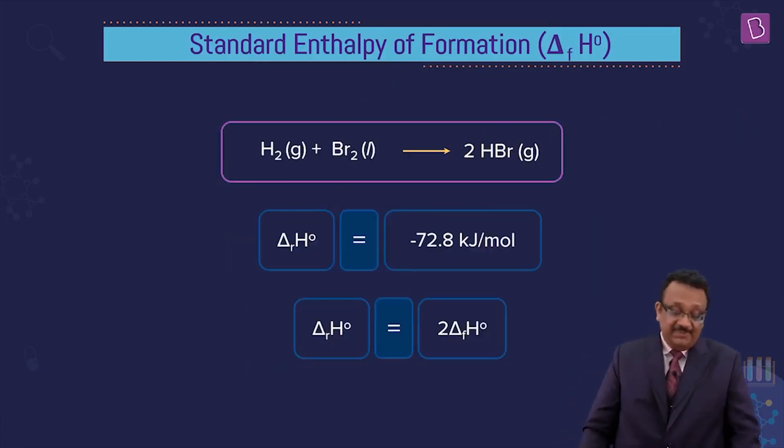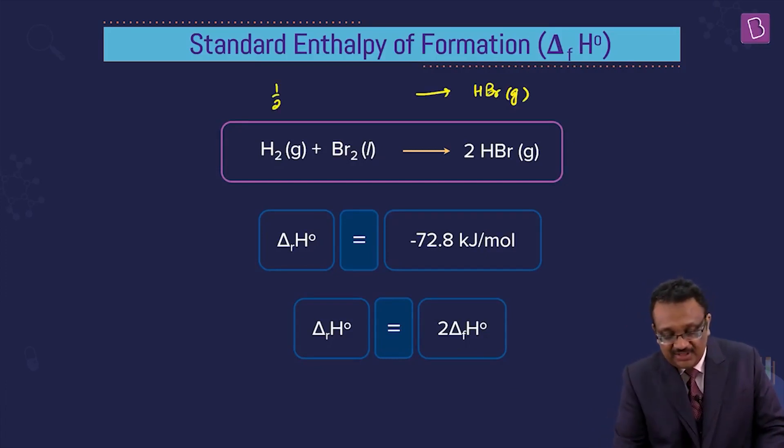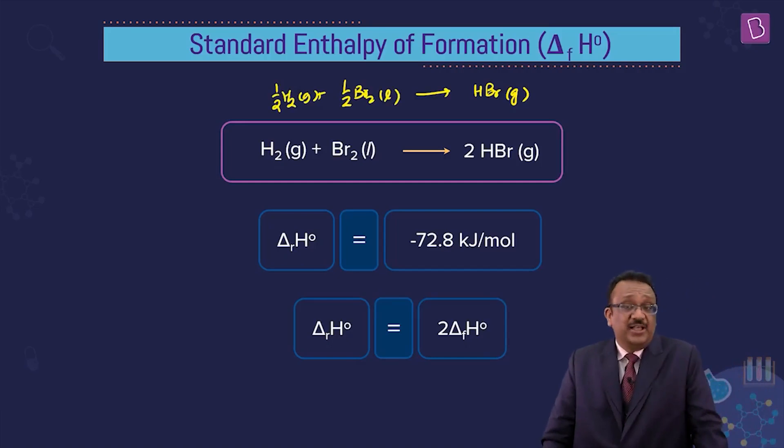So, we can write it for any kind of enthalpy of formation. How do we write it for HBr? If it is HBr, HBr is gas. This one mole is formed from elements in the standard states: H2 gas plus Br2 liquid. Then the delta H will be called enthalpy of formation of HBr.